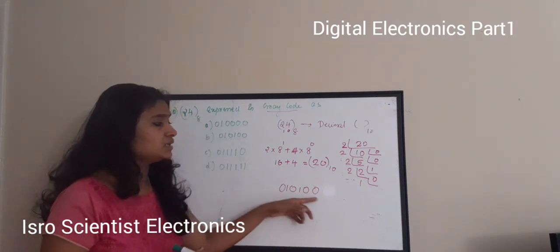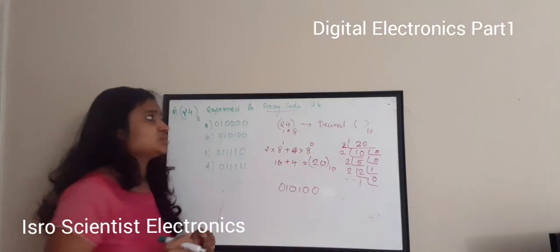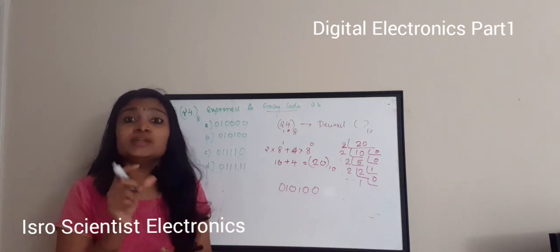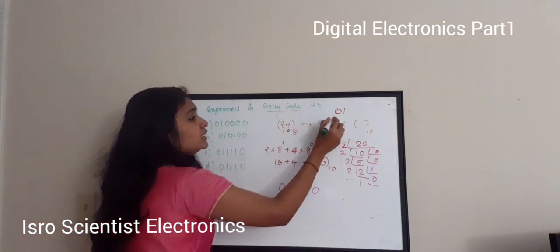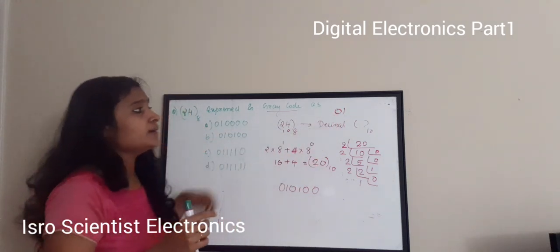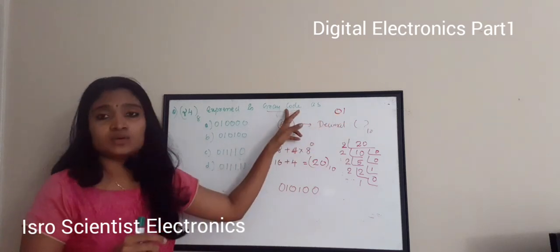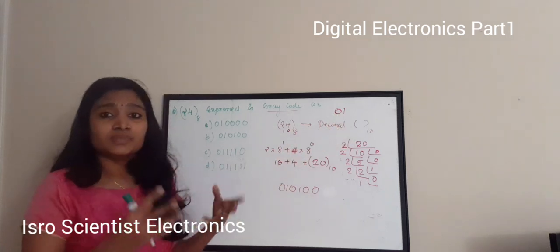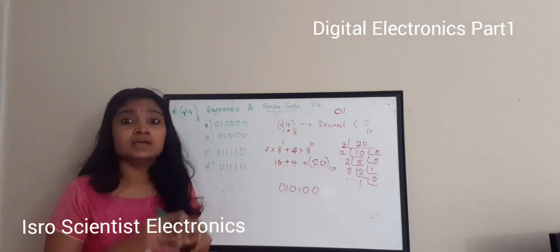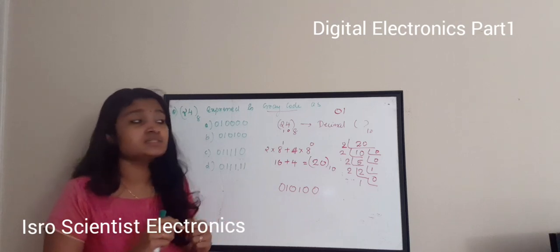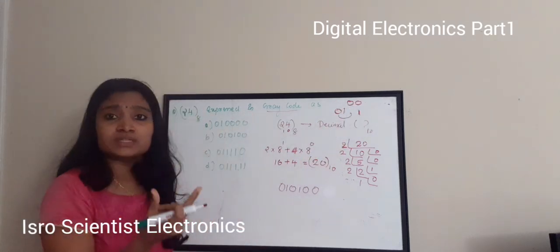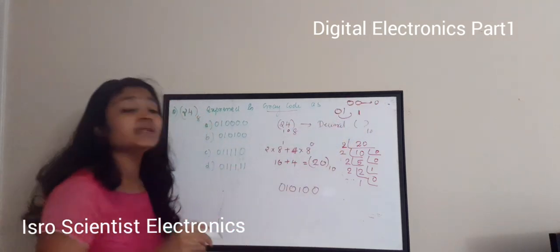What is Gray code? Gray code represents a change in one bit position between consecutive numbers. If I write 0 and 1, there is a 1-bit change. This 1-bit change is represented using the Gray code. If there is a change between consecutive bits — like 0 and 1 — it is represented as 1 in Gray code. If it is 0 and 0, there is no change, so it is represented as 0 in Gray code.